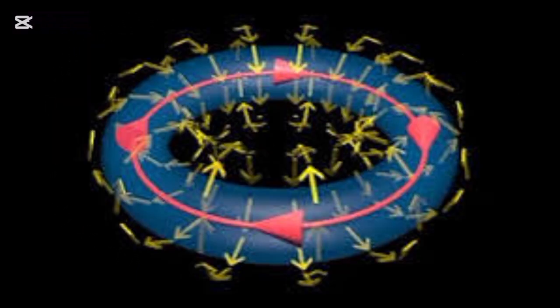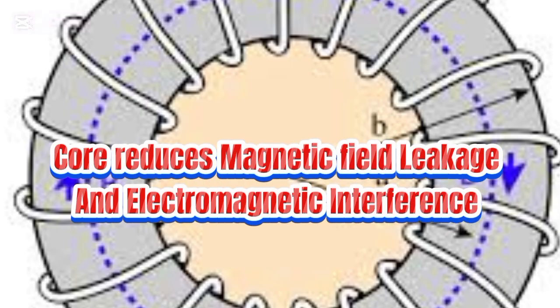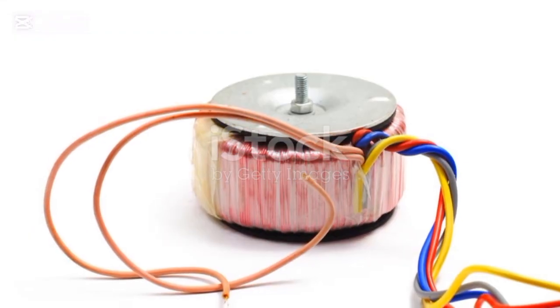This closed-loop shape keeps the magnetic field tightly confined, which significantly reduces magnetic leakage and electromagnetic interference. It keeps energy tight and clean, which is why it's perfect for audio equipment.